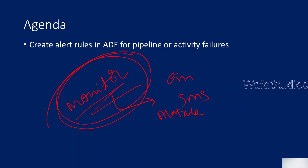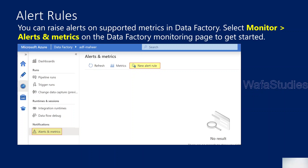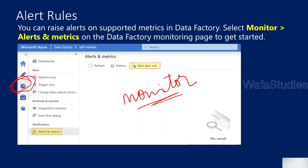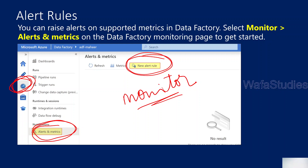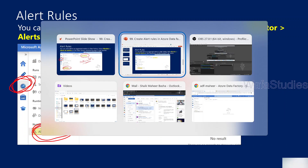Let me practically show you that so it makes more sense. To create alert rules, one way is to go to Azure Monitor and do alerts configuration from there — I'll show that in upcoming videos if possible. Or directly go to the Monitor menu inside Data Factory, go to Alerts and Metrics, and there you can see the option to create a new alert.